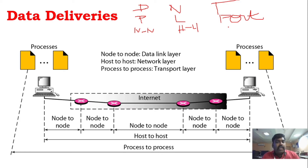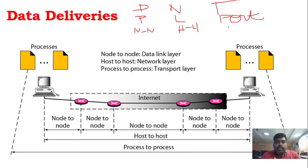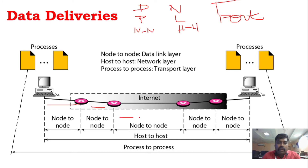Node-to-node delivery happens in the data link layer using physical addresses. Physical addresses are used only within a local network environment. So data transfer using physical addresses is limited to the local network only.